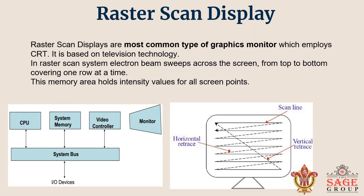In a raster scan system, the electron beam is swept across the screen one row at a time from top to bottom. As you can see in the diagram, these lines are called horizontal retrace and this line is called vertical retrace. These are the scan lines.